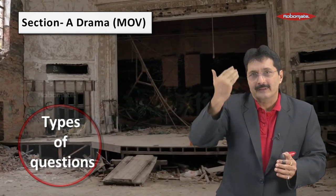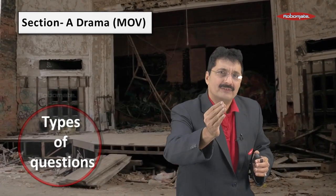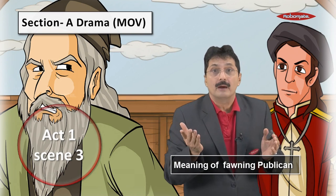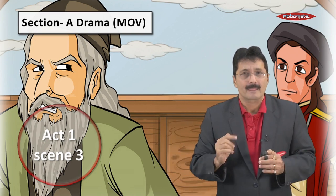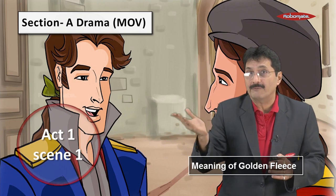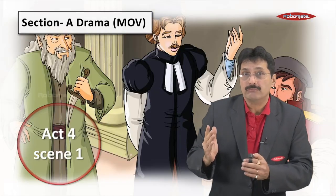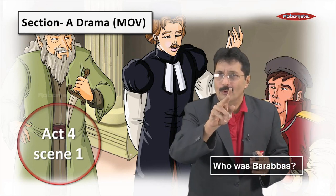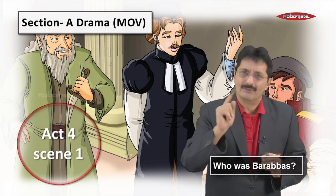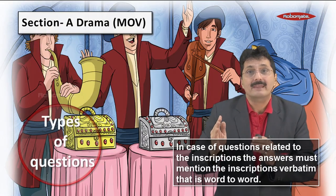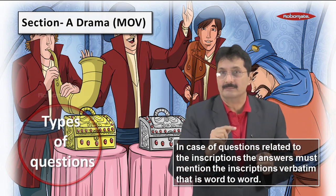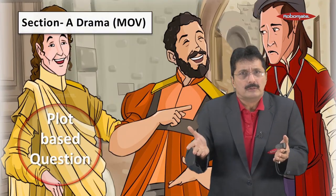For example, in the Merchant of Venice, if it's an extract from Act 1 Scene 3, the meaning of 'fawning publican' may be asked. An extract from Act 1 Scene 1 would ask the meaning of 'golden fleece,' or Act 4 about 'Parabas.' Go through your notes and your book — you will get the answers. You may also get inscription-based questions; you need to know the inscriptions on all the caskets verbatim, word by word.